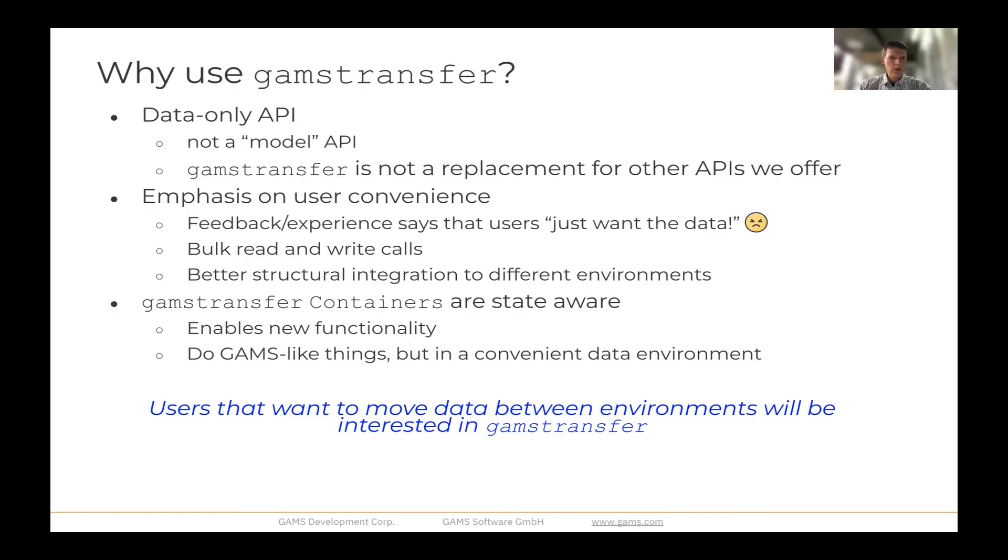We heard from our users that really they just want the data. And so we tried to make this follow that philosophy where we just get the data quickly and then allow users to transform it in ways that they want. The new state aware container structure enables a lot of nice functionality to do GAMS like things, but in an environment that's a little bit more data centric rather than model centric like GAMS is. So I think anybody that's interested in moving data around between environments will be interested in GAMS transfer. I hope that you give it a shot.